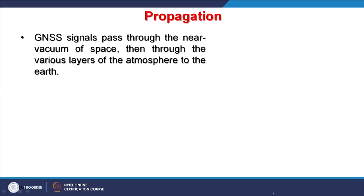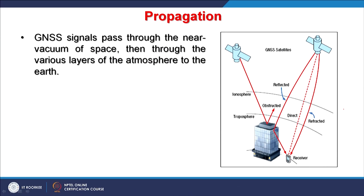Signals start from near vacuum of space. GPS satellites are 20,200 kilometers away from us, and when signals travel towards the Earth they encounter various layers of atmosphere. In an ideal situation the signal should travel straight to the receiver, but many times it does not receive directly. When passing through the ionospheric and tropospheric layers, reflected signals and refractions are also present.